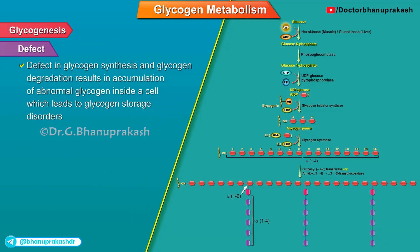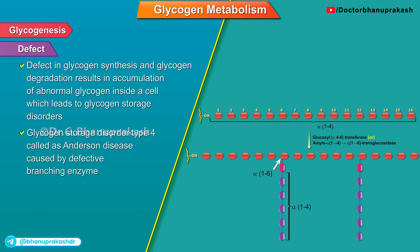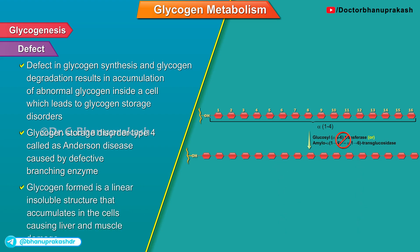Defects in glycogen synthesis and glycogen degradation result in accumulation of abnormal glycogen inside a cell, which leads to glycogen storage disorders. One such genetic disease is glycogen storage disorder type 4, called Anderson's disease, caused by a defective branching enzyme. The glycogen formed is a linear insoluble structure that accumulates in the cells, causing liver and muscle damage.